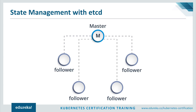Kubernetes uses etcd to store the cluster state. etcd is a distributed key-value store based on the Raft consensus algorithm. Raft allows a collection of machines to work as a coherent group that can survive the failures of some of its members. At any given time, one of the nodes in the group will be the master and the rest will be followers. etcd is written in the Go programming language. Besides storing the cluster state, etcd is also used to store configuration details such as subnets and config maps.